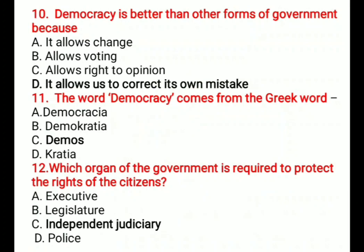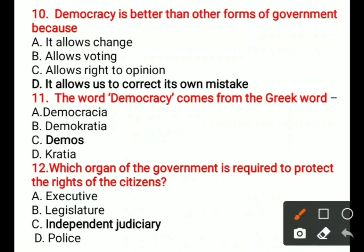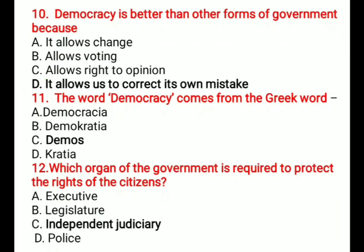Question 10: Democracy is better than other forms of government because — A) It allows change, B) It allows voting, C) It allows right to opinion, D) It allows us to correct its own mistakes. The correct option is D, it allows us to correct its own mistakes.